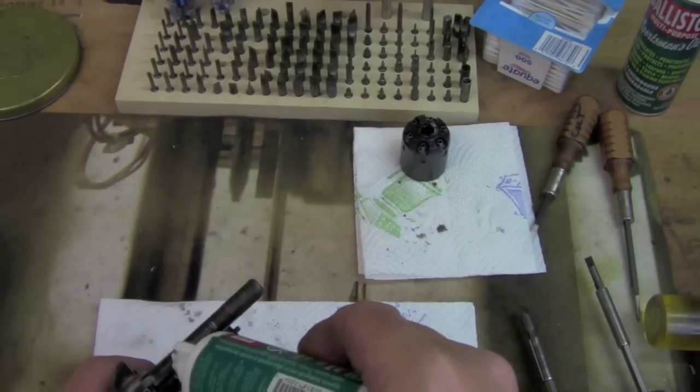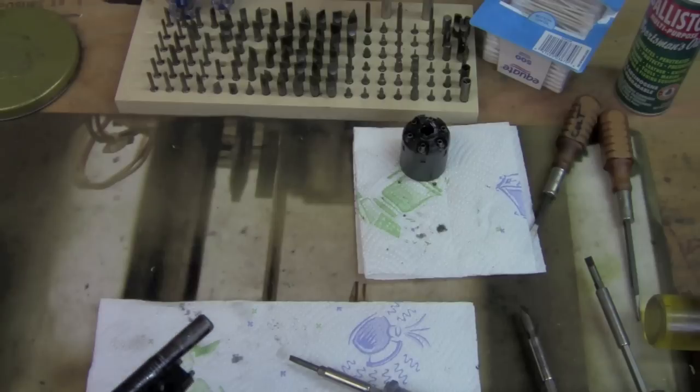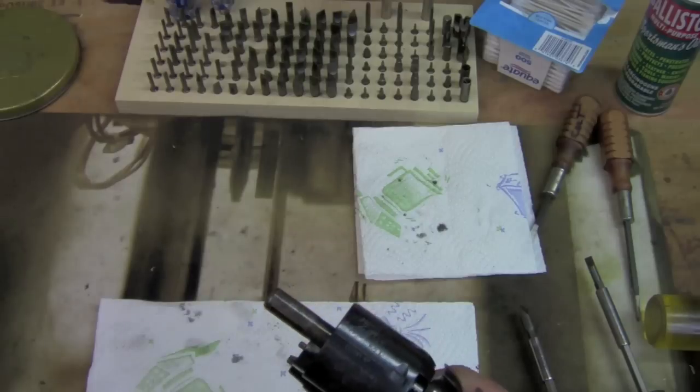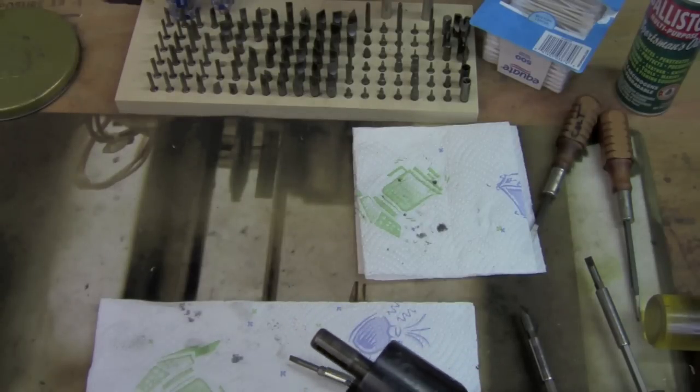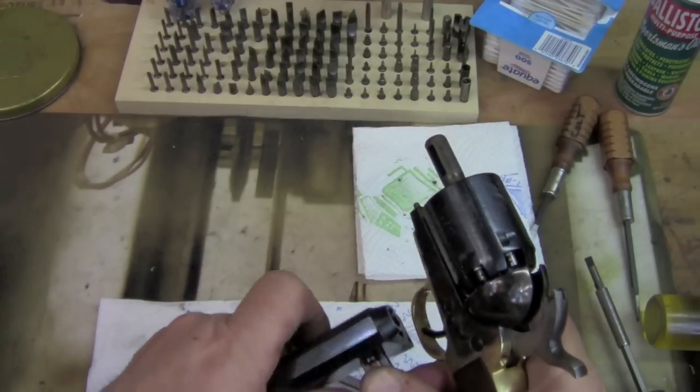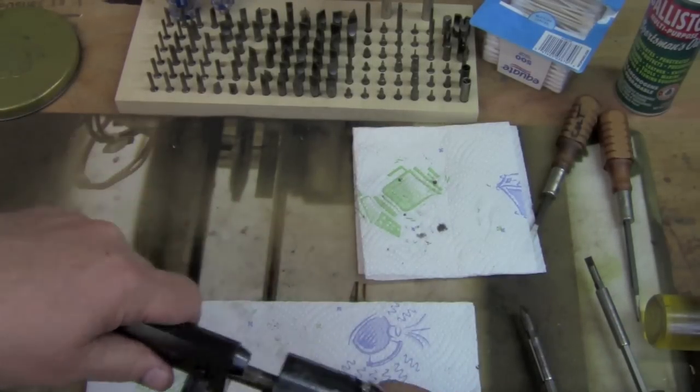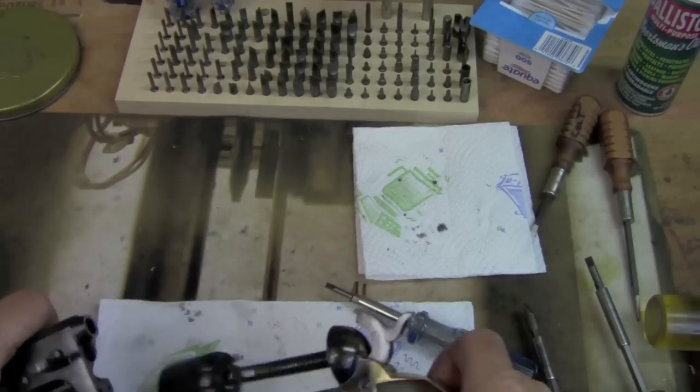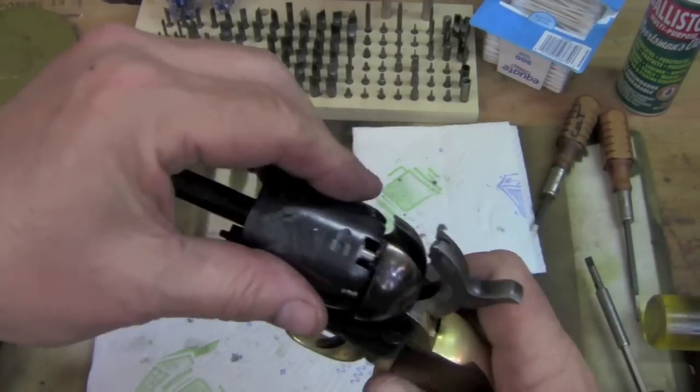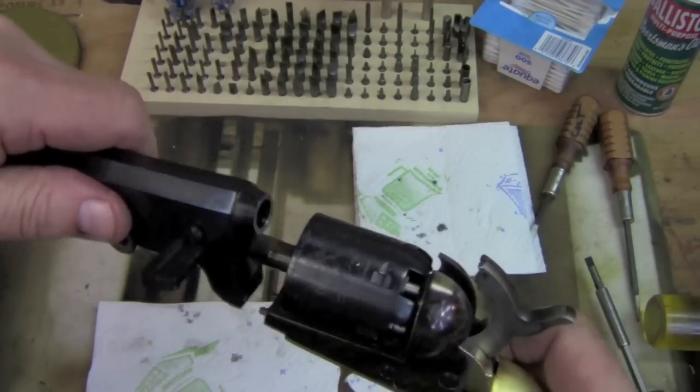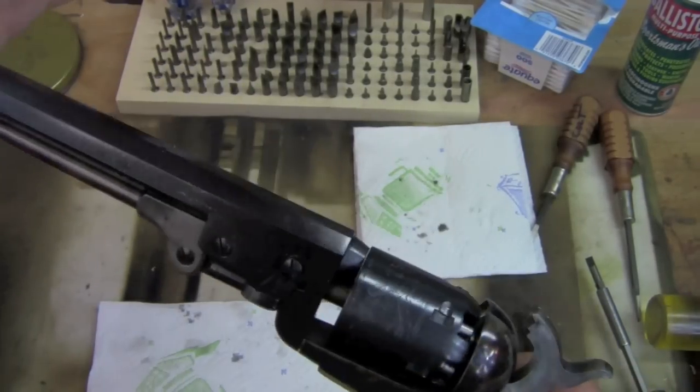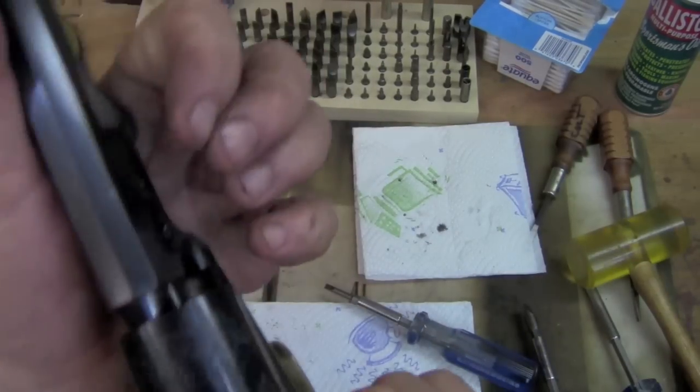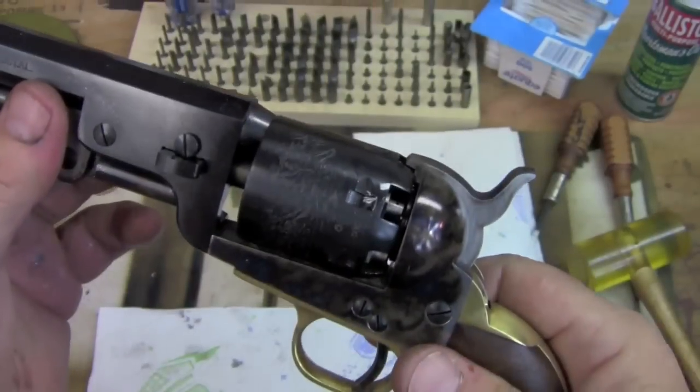Now I'm going to take some Ballistol. I'm going to lube the arbor. Put it on half cock. Replace the cylinder. Make sure that's out. And of course it's not. So you need three hands guys. There you go. See isn't that Ballistol good? Slides right off. Okay. I'm going to replace the cylinder. And I'm happy with that. And we're good.